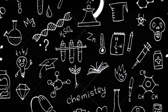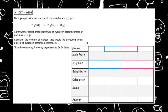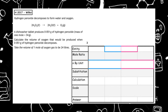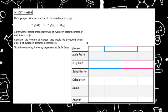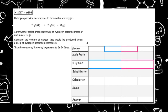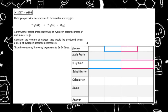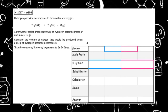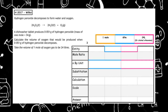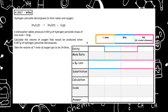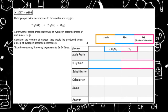This past paper question is from the Higher 2017, written 9b part 2. Hydrogen peroxide decomposes to form water and oxygen. The balanced equation is given. A dishwasher tablet produces 0.051 grams of hydrogen peroxide, which has a GFM of 34 grams. Calculate the volume of oxygen that would be produced when 0.051 grams of hydrogen peroxide decomposes. Take the volume of one mole of oxygen gas to be 24 litres. We take down the entities: hydrogen peroxide and oxygen.